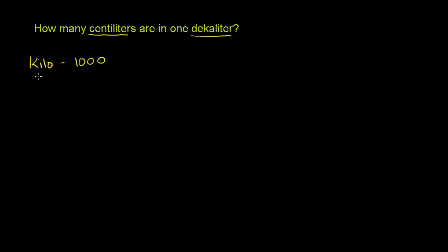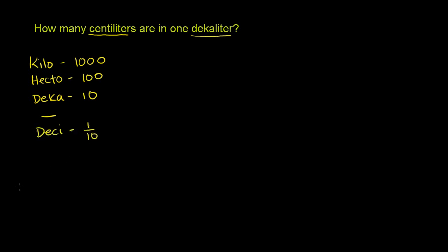I'll write the prefixes down — you should really have these memorized, because you're going to see them over and over again for different types of units. Kilo means 1,000. Hecto means 100. Deca means 10. If you have nothing, that just means 1. Deci means one tenth. Centi means one hundredth. Milli means one thousandth.